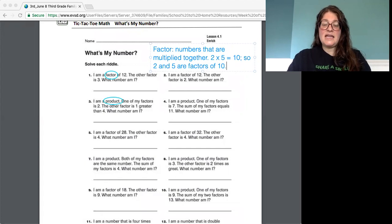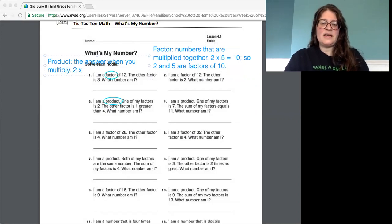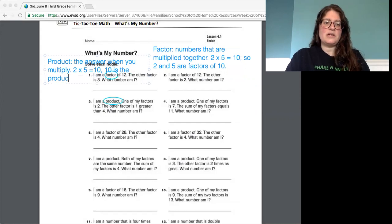And then the other word that I circled there is product. That is actually I'll type it somewhere else so you can actually see it. Product. The answer when you multiply. So in our example 2 times 5 equals 10, 10 is the product.